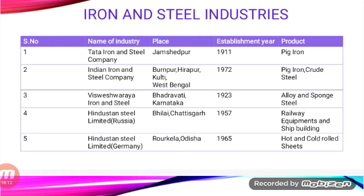Several industries like engineering, heavy machines and machine tools, automobiles, locomotives, and railway equipment use iron and steel as their primary raw material. The modernization of the iron and steel industry began in 1907. The first iron and steel industry was started by Jamshedji Tata, known as the Tata Iron and Steel Company, located at Jamshedpur. This is the only private sector iron and steel industry, and its proper production started in 1911.